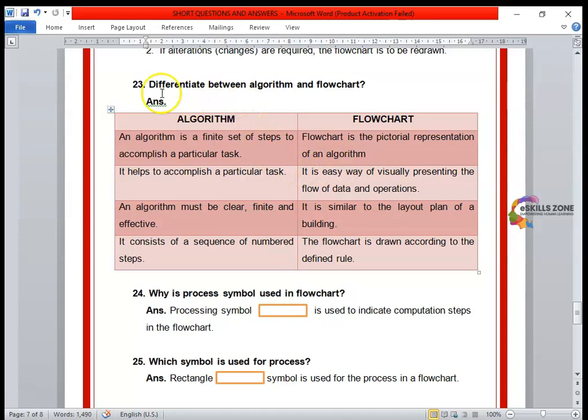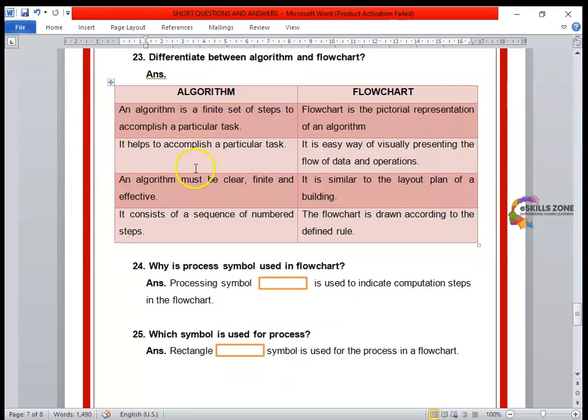Next question, number 23. Differentiate between algorithm and flowchart. So, I have drawn a table for a better explanation. First column contains all the points related to the algorithm, and the second column is for the flowchart. So, let's start from here.